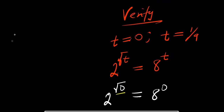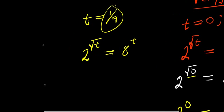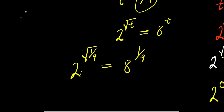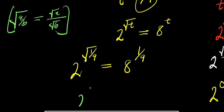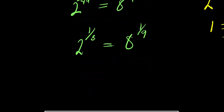Now let's verify t equals one over nine in 2 power square root of t equals 8 power t. I have 2 power square root of one over nine equals 8 power one over nine. Using the rule that square root of (a/b) equals square root of a divided by square root of b, I get 2 power (square root of 1 over square root of 9). Square root of 1 is 1 and square root of 9 is 3, so this is 2 power (1/3) equals 8 power (1/9).